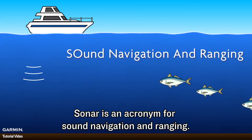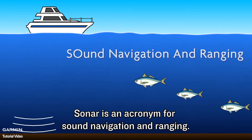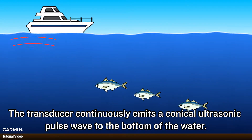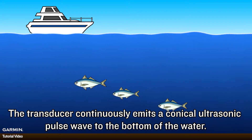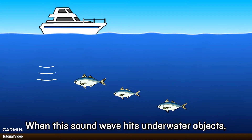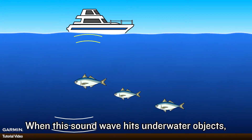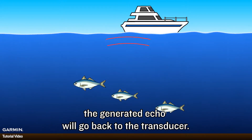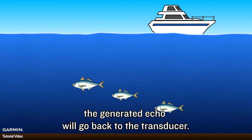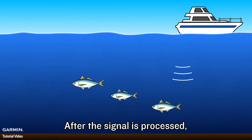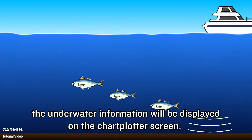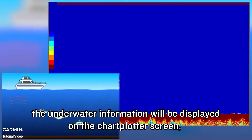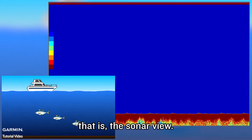Sonar is an acronym for sound navigation and ranging. The transducer continuously emits a conical ultrasonic pulse wave to the bottom of the water. When this sound wave hits underwater objects like seabed, seaweed, or fish, the generated echo will go back to the transducer. After the signal is processed, the underwater information will be displayed on the chart plotter screen — that is, the sonar view.